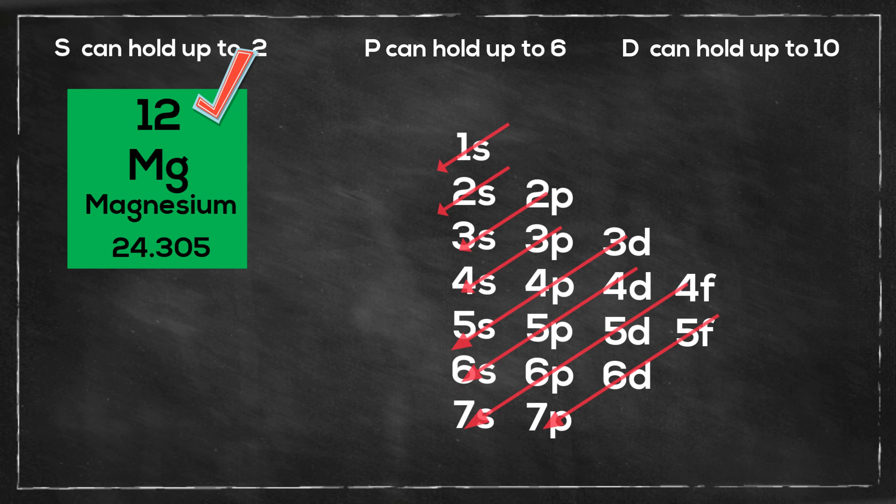Has an atomic number of twelve, so it has twelve electrons. I'm going to start at 1s, so it will be 1s2, 2s2, 2p6. That gives me ten electrons I've used, so it will be 3s2.